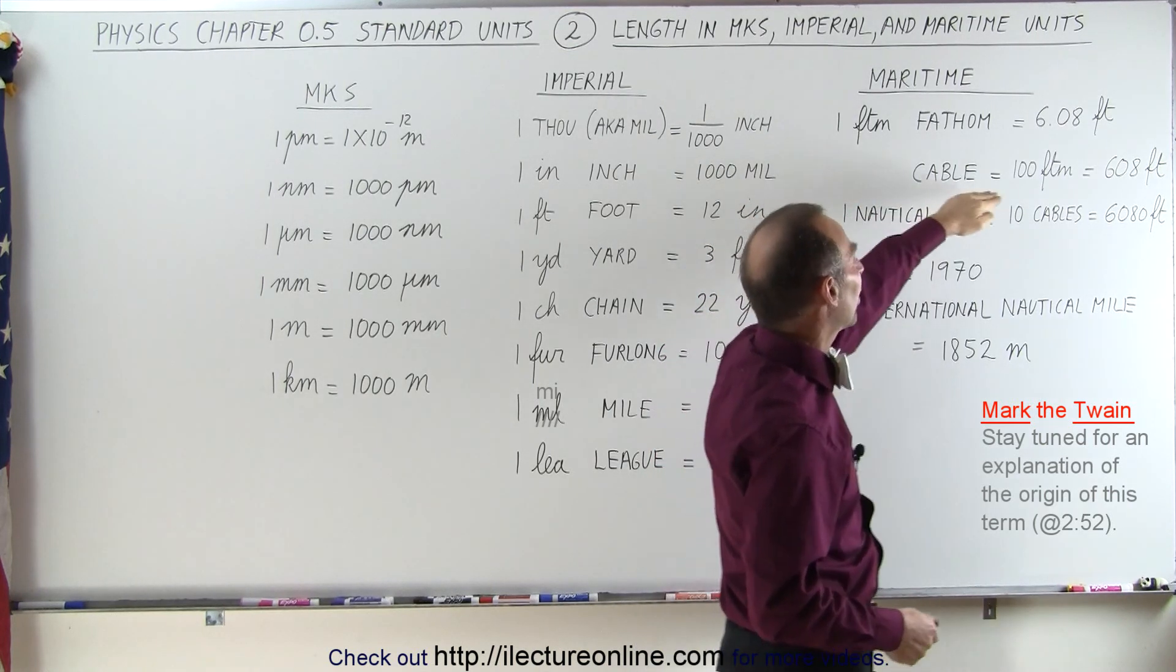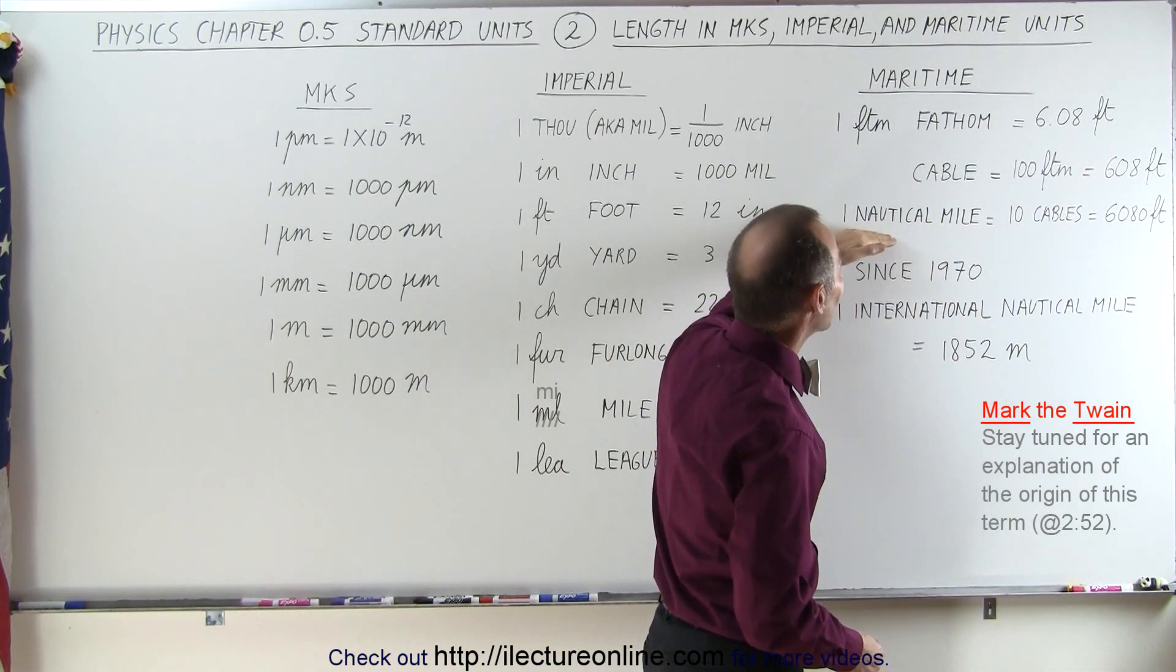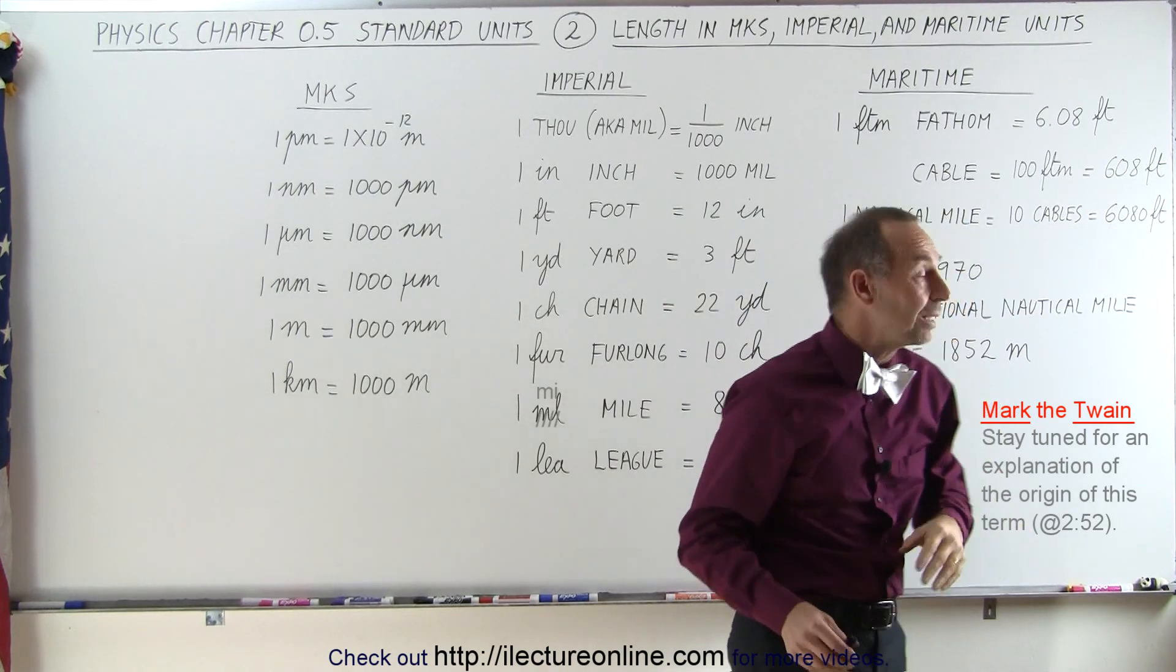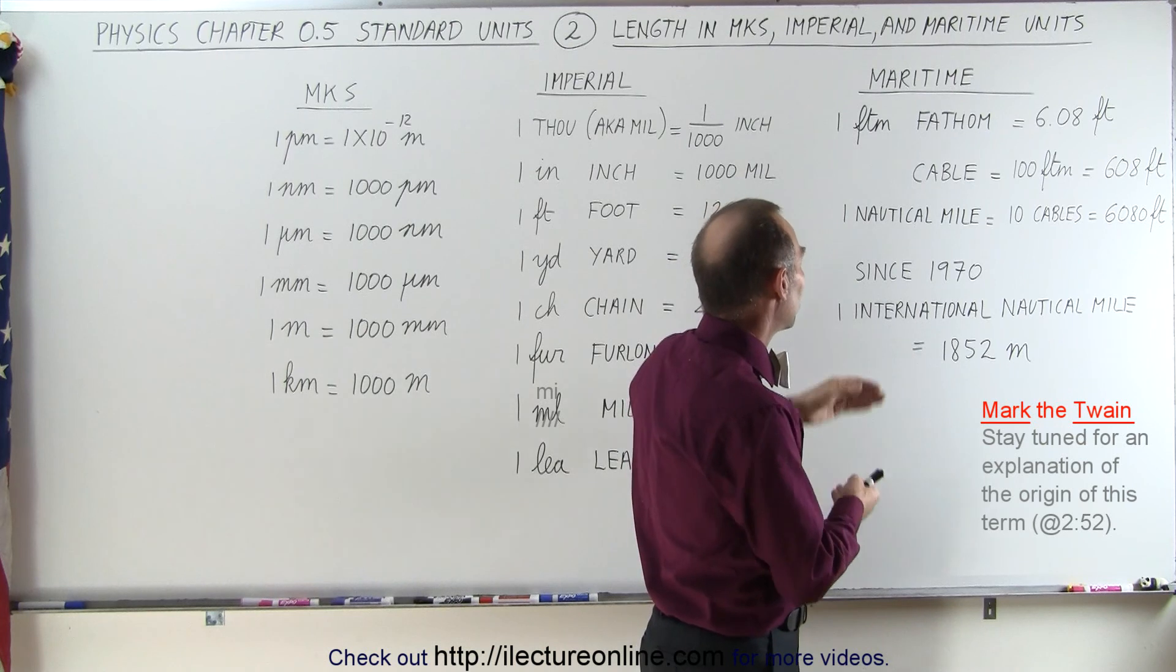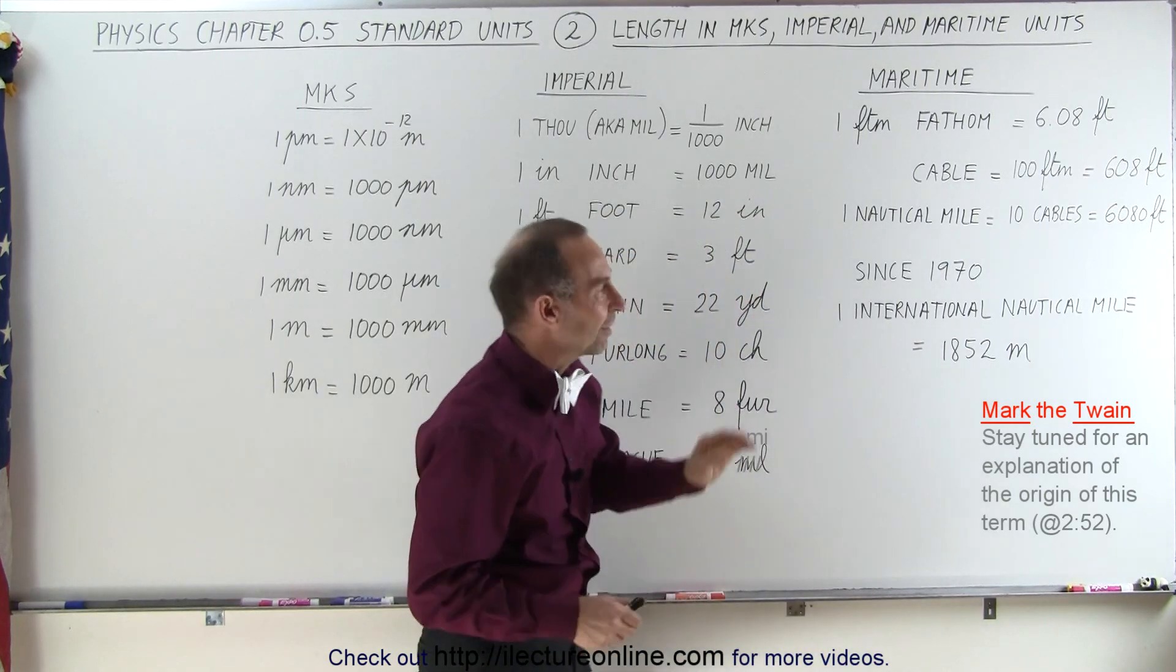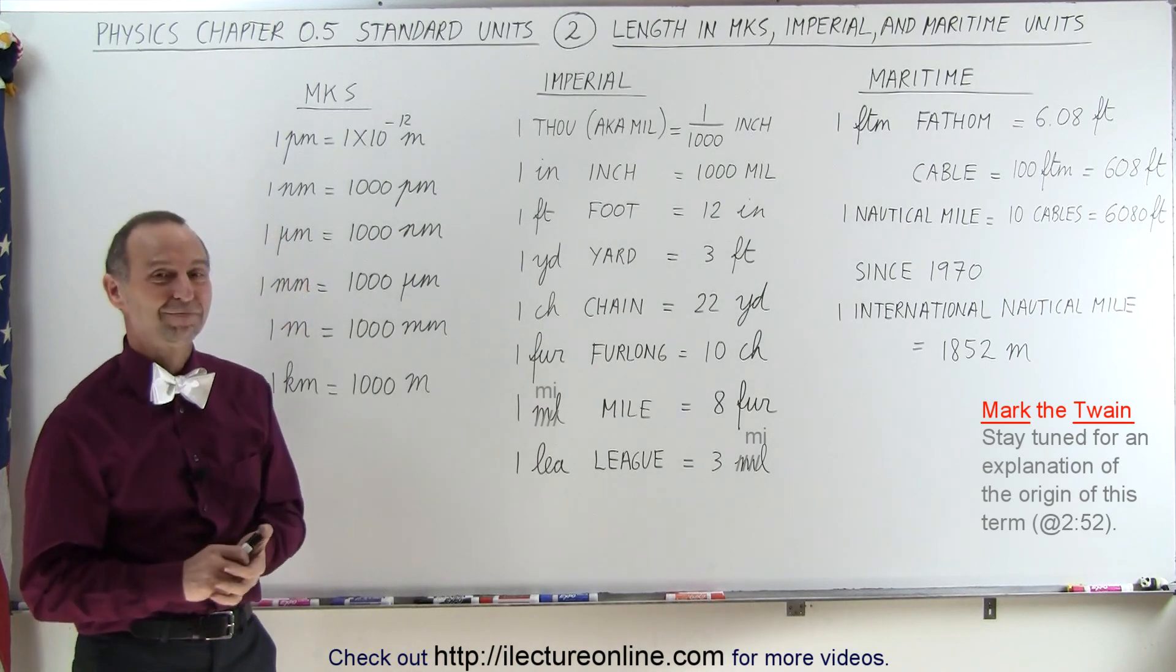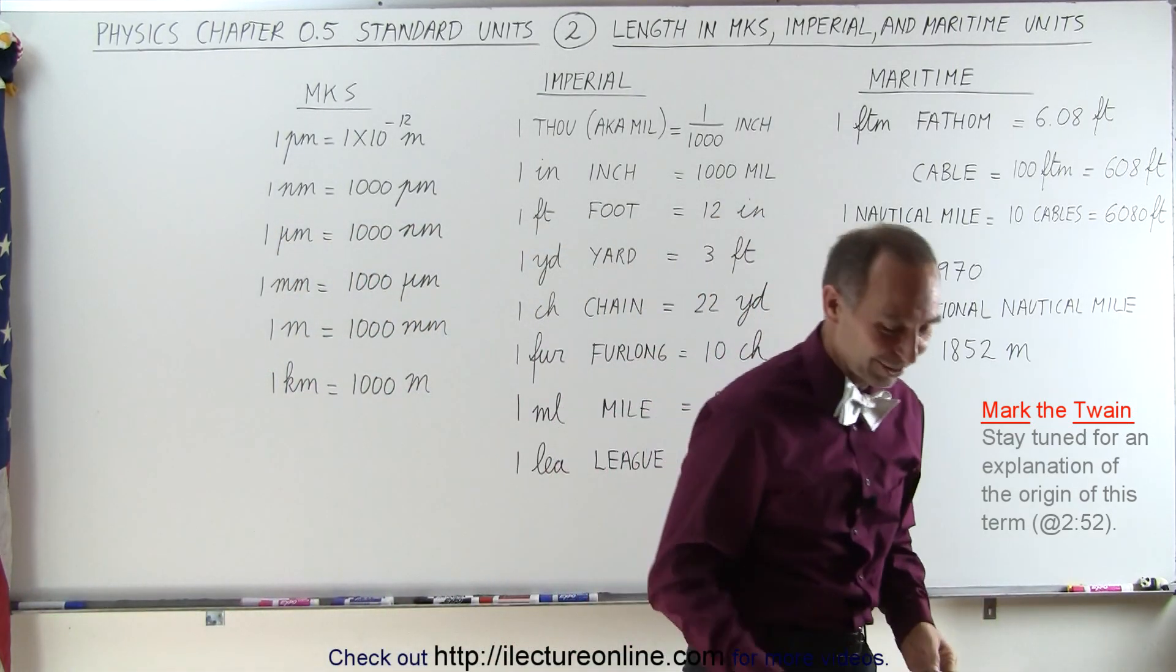A cable, which is 100 fathoms, is therefore 608 feet, and a nautical mile, which is 10 cables, is 6080 feet. Well, in 1970 there was an agreement made where we would have an international nautical mile, which was then defined as 1852 meters, which is slightly different from the original measure of a nautical mile. That's another video sometime.